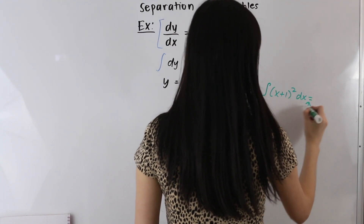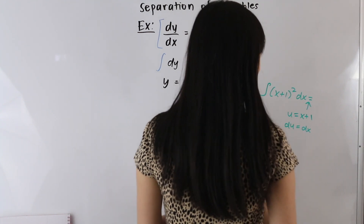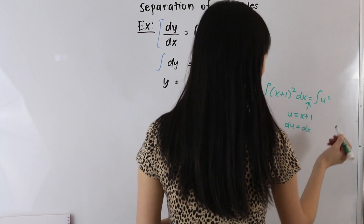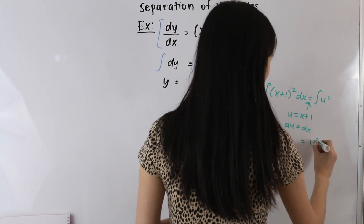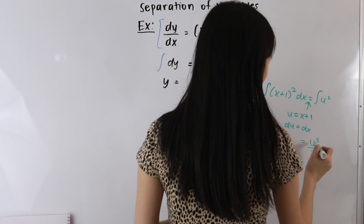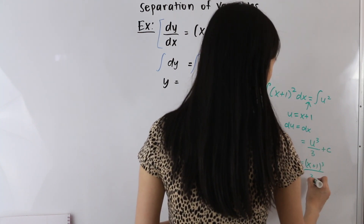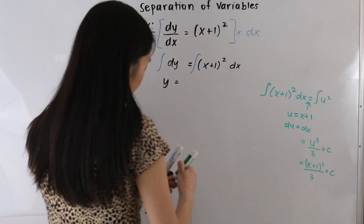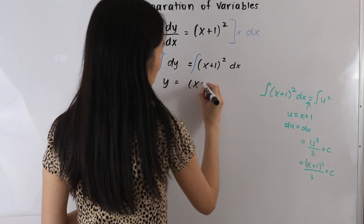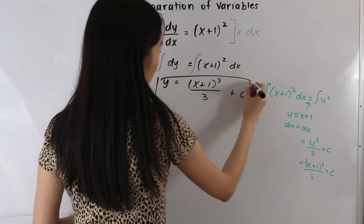We set u equal to x plus 1. Taking the derivative, we get du is equal to dx. So this integral becomes the integral of u to the second power, which ends up being u to the third over 3 plus a constant. Plugging in x plus 1 for u, we get x plus 1 to the third power over 3 plus a constant. So our solution is y equals x plus 1 to the third power over 3 plus C. And that is our final answer.